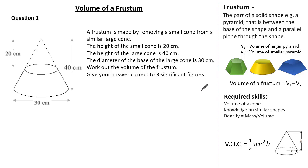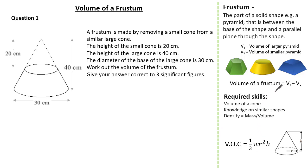Given we know the formula for the volume of a cone is one-third times pi times r squared times the perpendicular height, and we also know to work out the volume of a frustum it is the larger volume subtract the smaller volume.